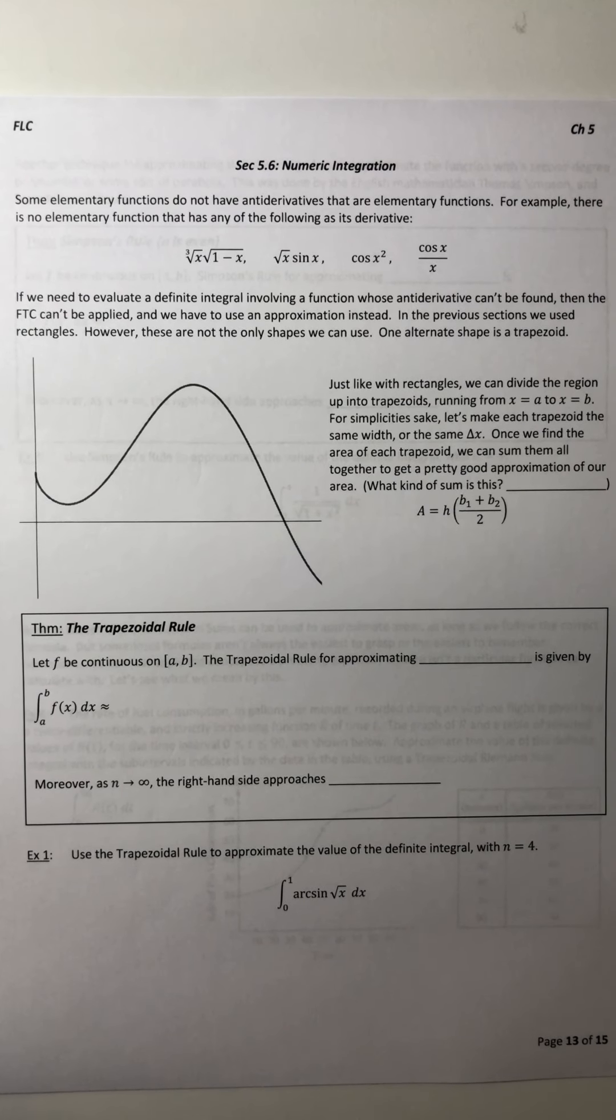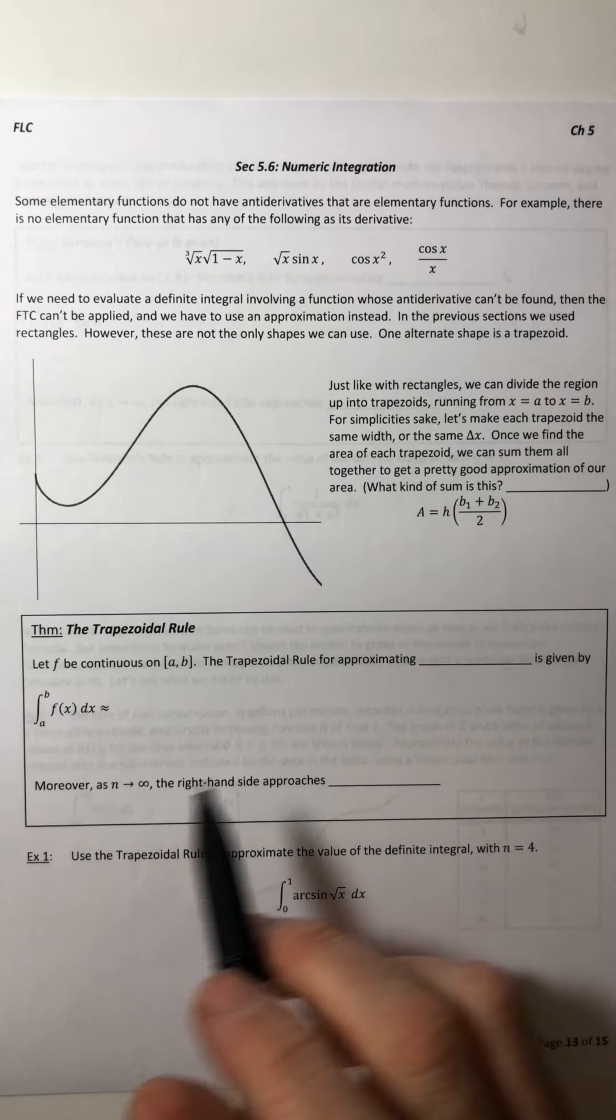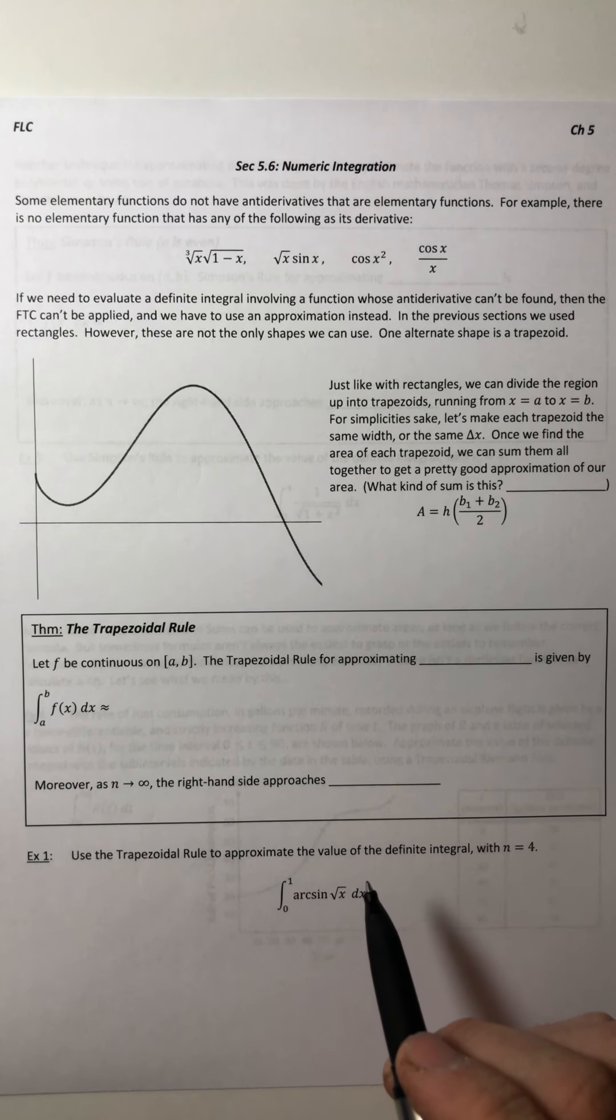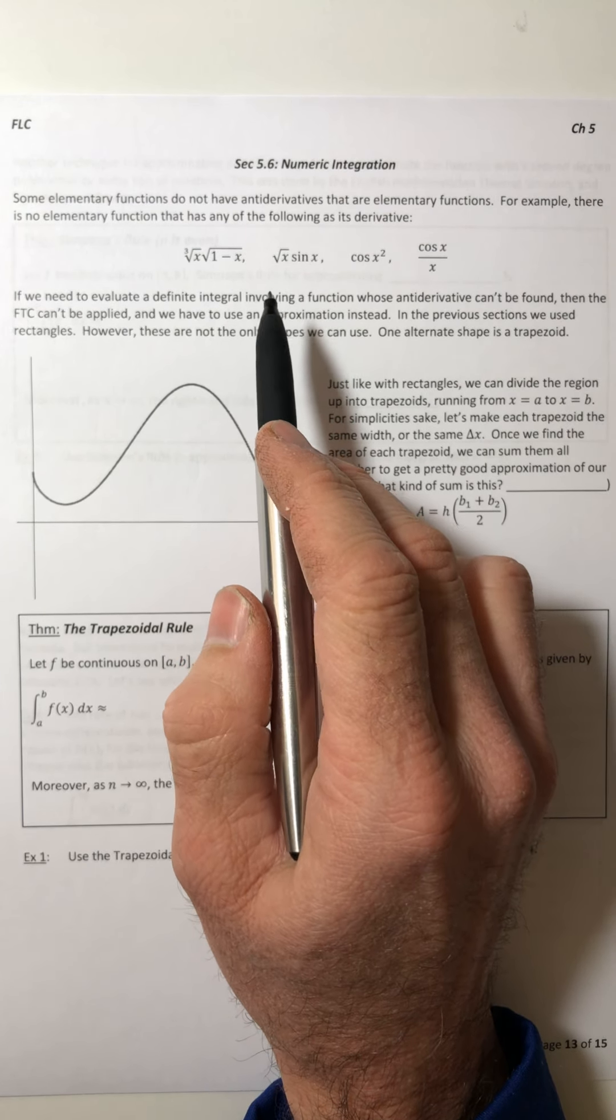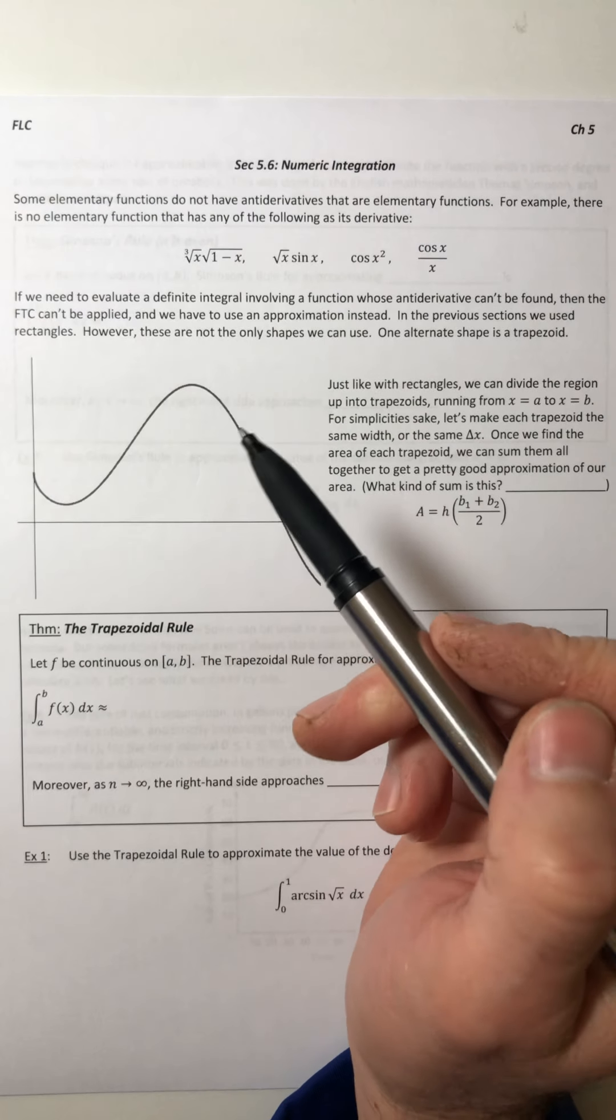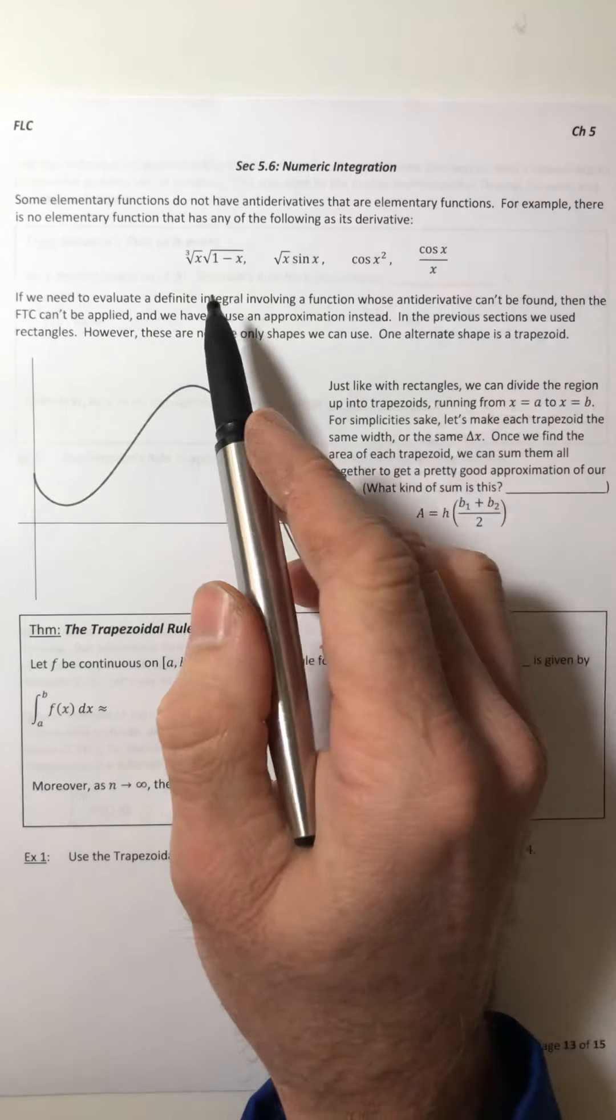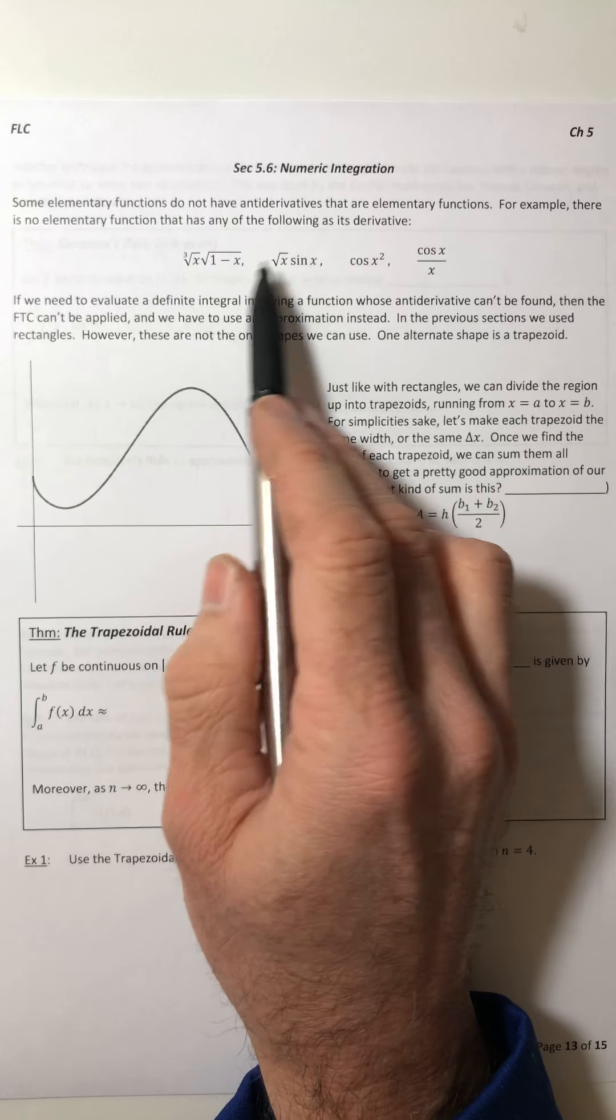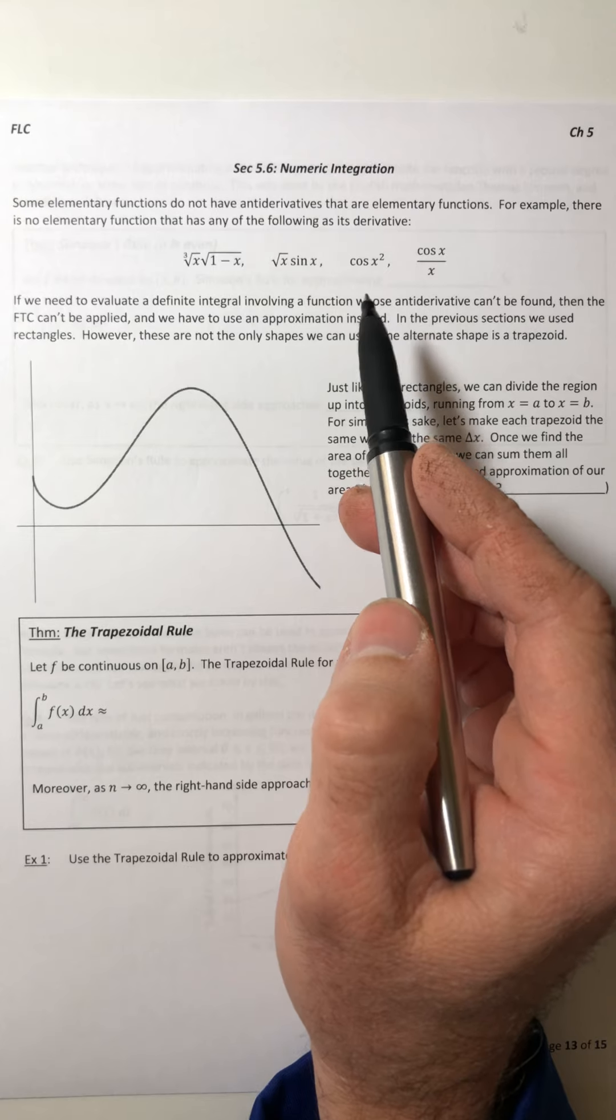Hello mathletes, alright section 5.6 numeric integration. So we're taking a little bit of a break from the rigors of all this integration stuff that we've been doing in the past couple of sections because some of these functions don't have antiderivatives that are easy to get. For example, there's no easy or elementary function that has any of these as its derivative, or at least not something that would be really nice.